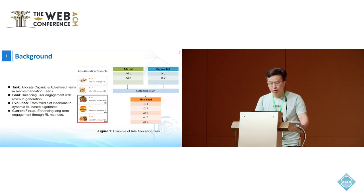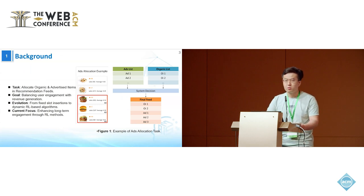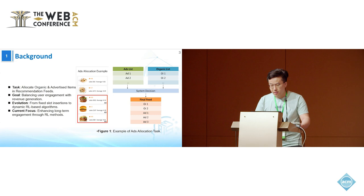Currently, one of the primary revenue measures for internet platforms is displaying ads in the feed stream. Figure 1 shows an example of allocation of an ad alongside organic items. Ad allocation's objective is to balance user experience with platform revenue, as excessive advertising can detract from user experience.